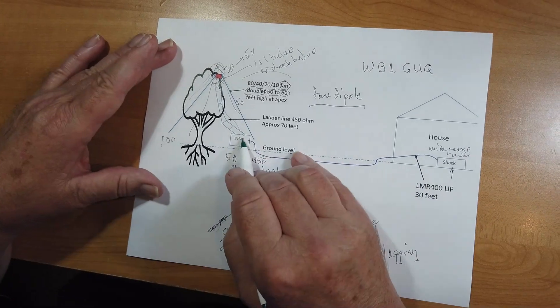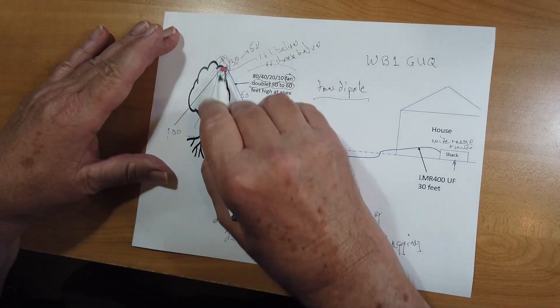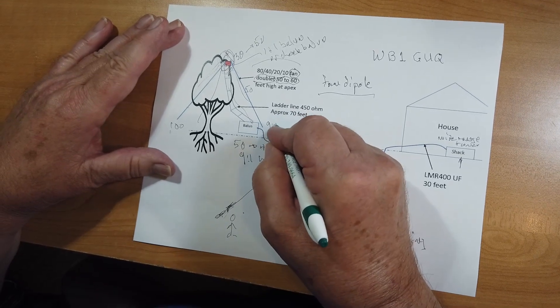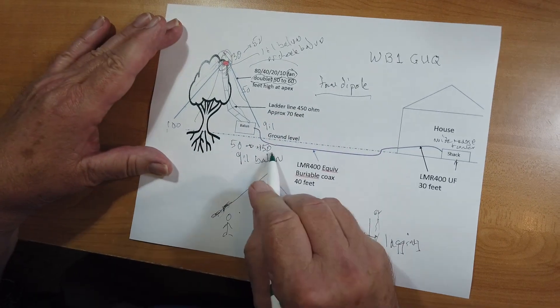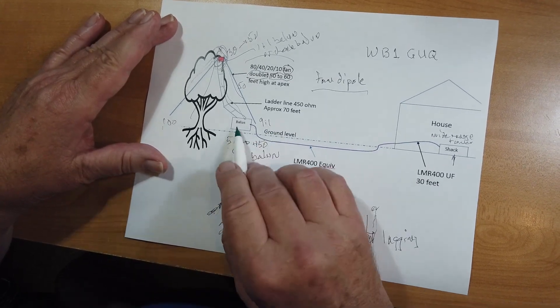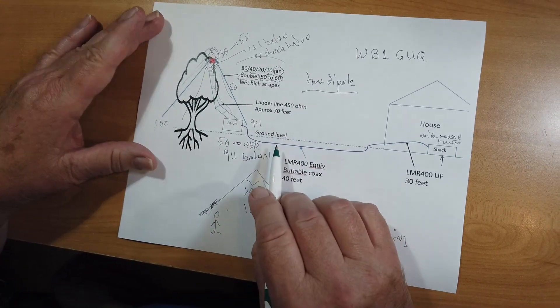If you do put a balun in here and go with the ladder line, this balun is nine to one, 50 to 450. It's not a four to one balun, nine to one balun. And you can put it in there and do that.